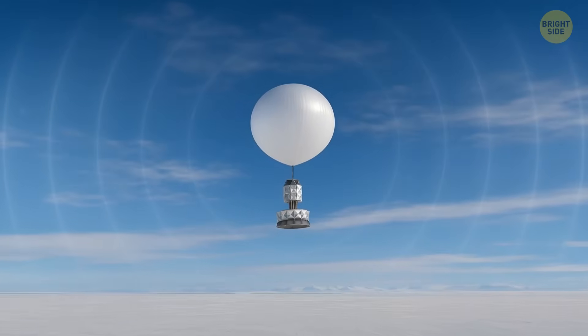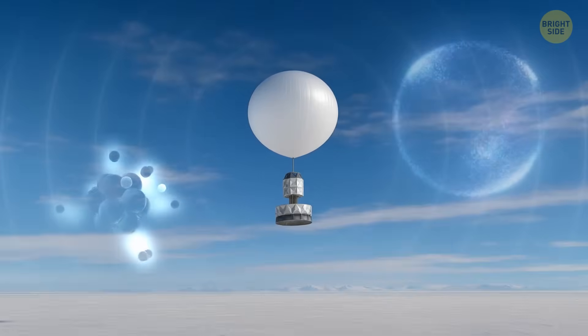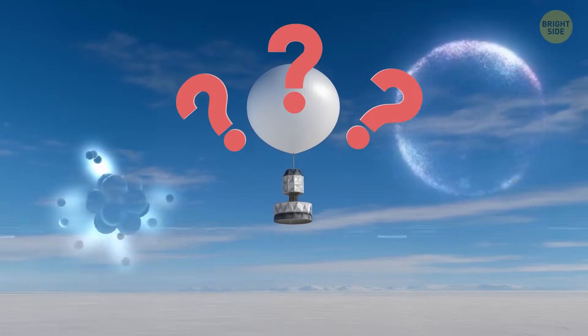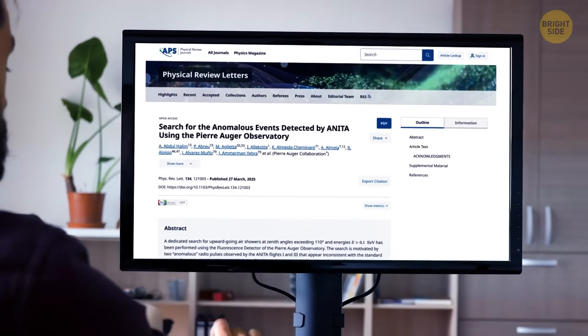So, whatever ANITA has picked up, it's not behaving like anything scientists have seen before. It might mean there's some totally new type of particle out there, or maybe something else is going on that we just don't understand yet. They published the findings in Physical Review Letters, but the mystery remains unsolved. No one really knows what's going on under that Antarctic ice. Just that something out there isn't playing by the rules.